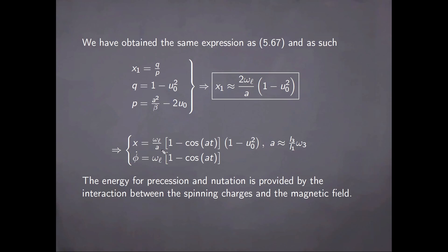These are both given in terms of the Larmor frequency, the original inclination of the top with respect to the laboratory axis, and in terms of the constant a, which is just the ratio of the principal moments of inertia of the top and its initial spin frequency. And what we can see in both cases is that the energy for precession and nutation is provided by the interaction between the spinning charges and the magnetic field, as seen in the fact that both quantities are non-vanishing simply because the Larmor frequency is non-vanishing — so there is a non-zero field of magnetic induction in the space where these charges are rotating.